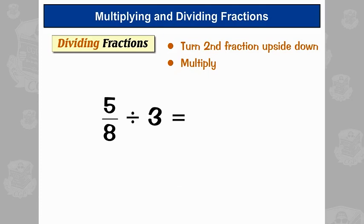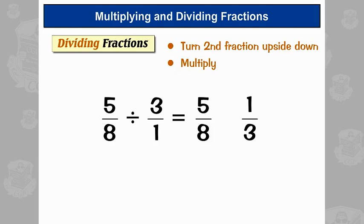What about 5-eighths divided by 3? It looks simpler, but it can catch people out. We use our trick with the 3 and turn it into 3 over 1. Then we carry on as normal — turn the second fraction upside down and times them. 5 times 1 is 5, 8 times 3 is 24, so the answer is 5 twenty-fourths.